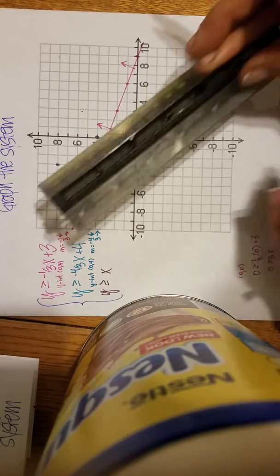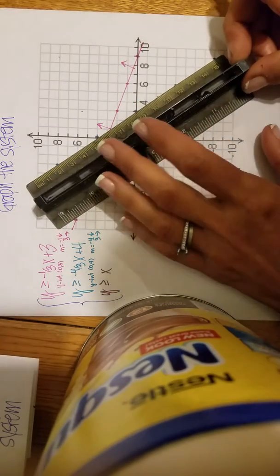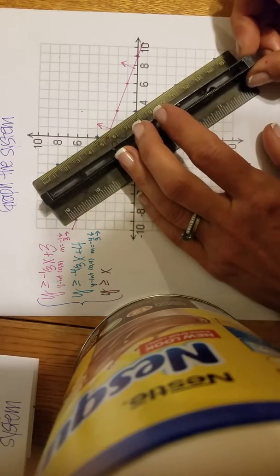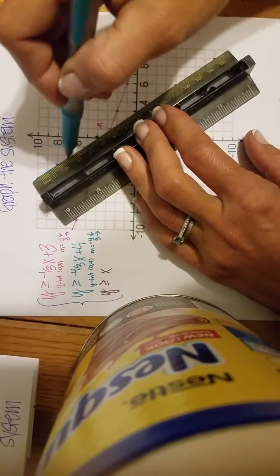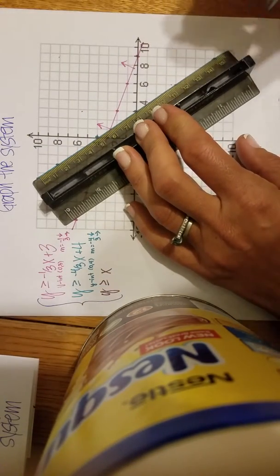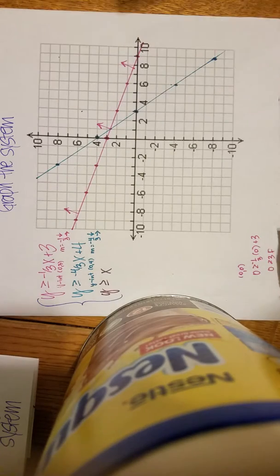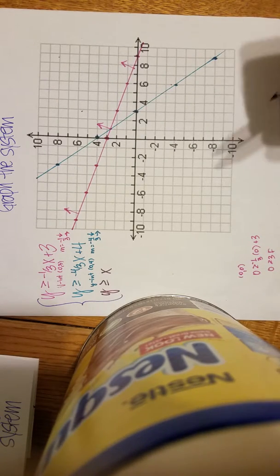So I'm going to get my straight edge. And again, I'm going to make a solid line because there is a strict and not a strict inequality here. If it were strictly greater than, then I would use a dashed line.